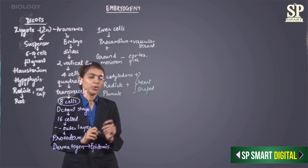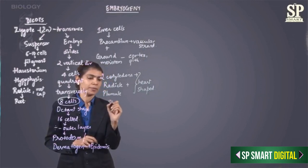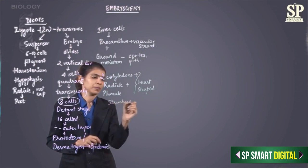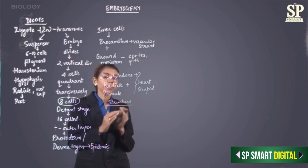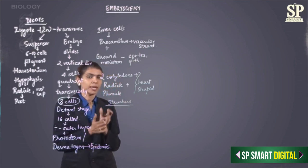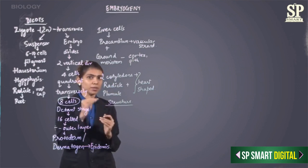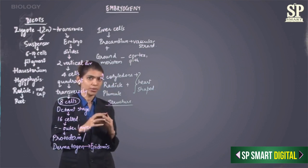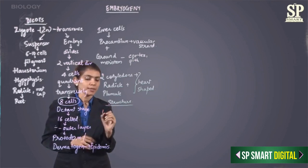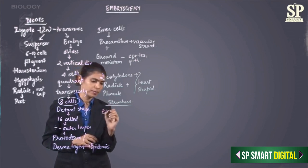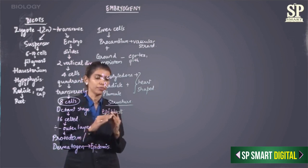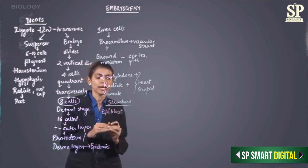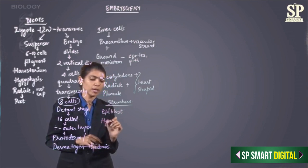Let us now look at the structure of the embryo in dicots. The part of the embryonal axis above the cotyledons is called the epicotyl, and the part of the embryonal axis below that is called the hypocotyl.